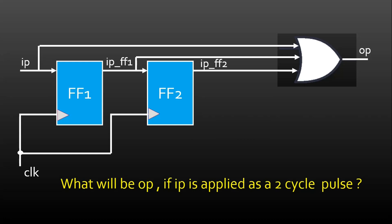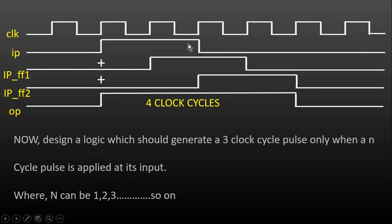The next question is: what will be the timing waveform of output signal OP if instead of applying one clock cycle pulse at the input IP, I am applying a pulse of two clock cycles? The output of the first flip-flop is again a two clock cycle pulse but delayed by one clock cycle. The output of the second flip-flop is again a two clock cycle pulse but delayed by two clock cycles with respect to input IP. When I do the OR operation on these three pulses, I get a pulse of four clock cycles. We can conclude that if I apply a one clock cycle pulse, this stretcher gives a three clock cycle pulse; if I apply a two clock cycle pulse, the output is four clock cycles. So this pulse stretcher is adding two extra clock cycles at its output.